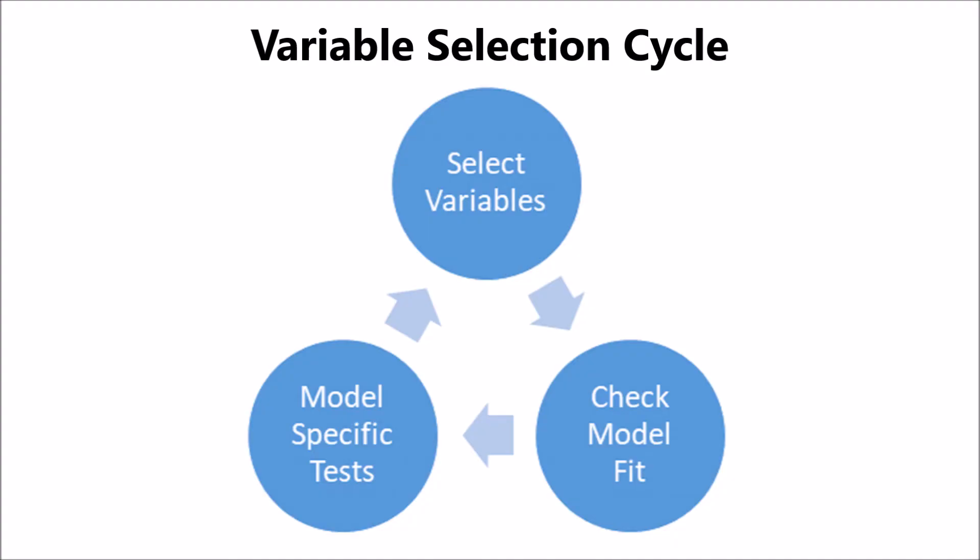This is a loop — once you check and do all your model variable selection, then check your VIF, you need to go back to the variable selection process, rerun the model, re-look at the model fit, see if the variables are statistically significant by looking at the p-values, and go through the cycle over and over again. It usually doesn't take too much time. Model fit is another key criteria to look at.